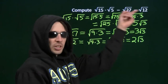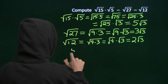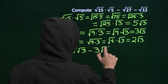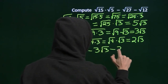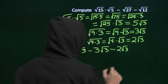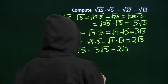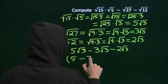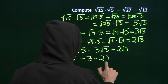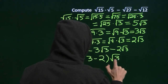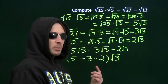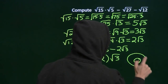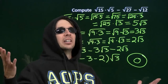So now I can write the whole expression as 5 times the square root of 3, minus 3 times the square root of 3, minus 2 times the square root of 3. Now I'll factor out the square root of 3 using the distributive property, and we get 5 minus 3 minus 2, all times the square root of 3. 5 minus 3 minus 2 is 0. 0 times anything is 0, so we get 0, and we're done.